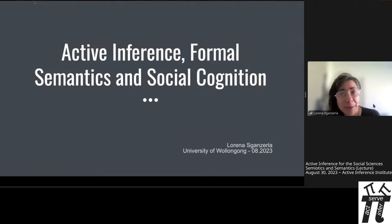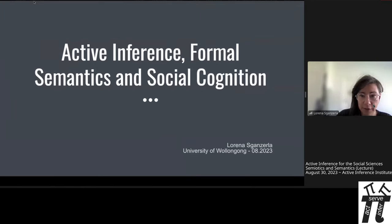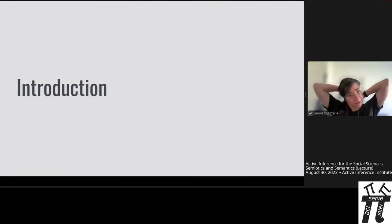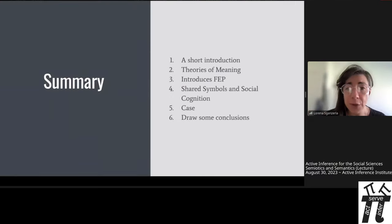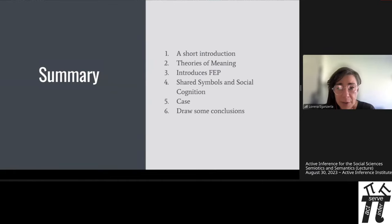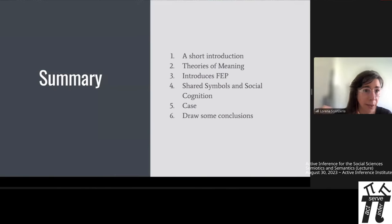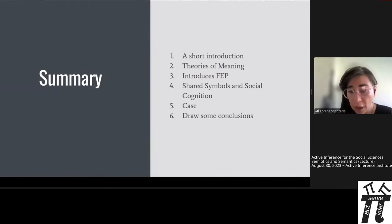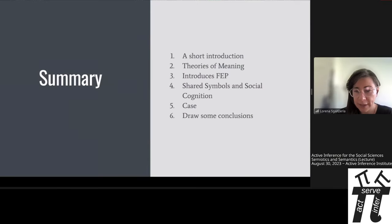Let's talk about active inference, formal semantics, and social cognition. I'll start with a short introduction, then talk a bit about theories of meaning, the free energy principle and active inference, and how shared symbols and social cognition can be thought together. I'll bring one case that I find interesting and then we'll draw some conclusions. Let me know what you think in the comments.